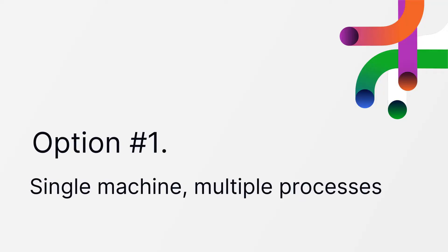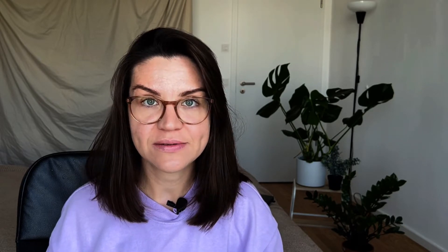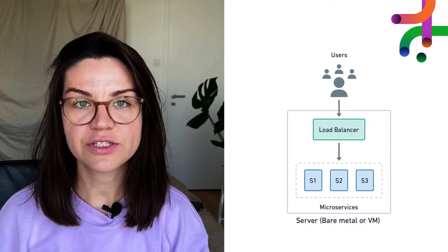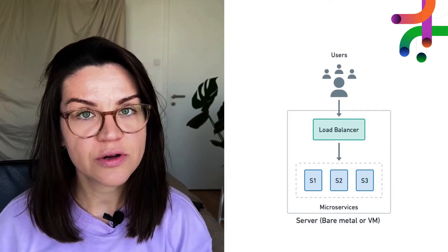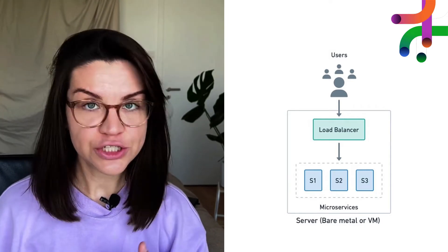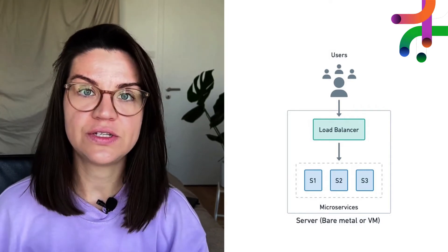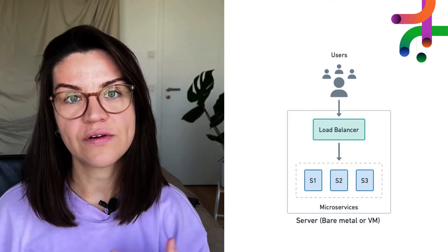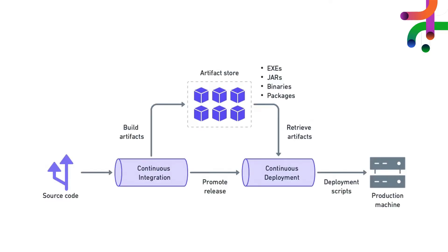Option one: single machine, multiple processes. In short, buy or rent a server and run microservices as processes. At the most basic level, we can run a microservice application as multiple processes on a single machine. Each service listens to a different port and communicates over a loopback interface. Continuous integration for this option will follow the same pattern — build and test an artifact with a CI pipeline, then deploy with continuous deployment.